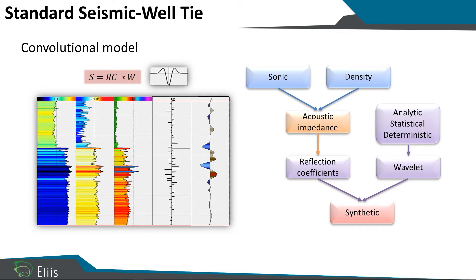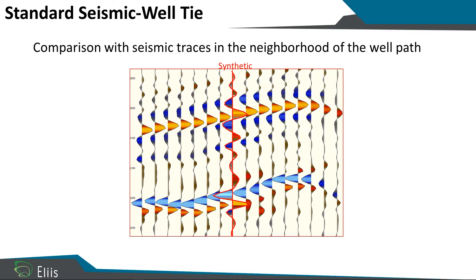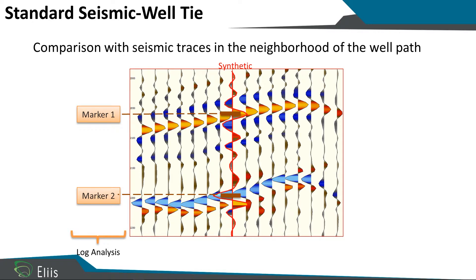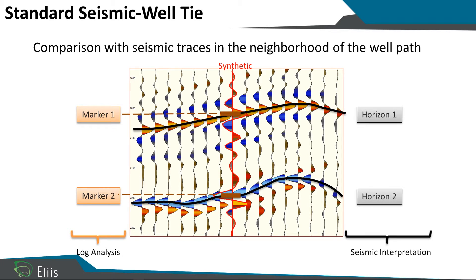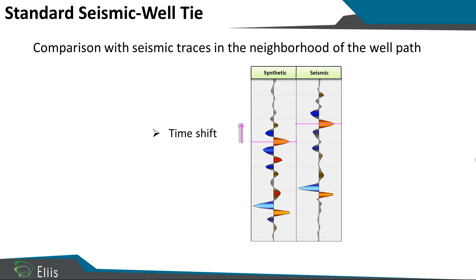The standard seismic to well tie starts with the sonic and the density to compute the acoustic impedance and then the reflection coefficient. On the other part, I compute the wavelet, make a convolution between the two to compute my synthetic, and then I try to tie my synthetic with my seismic extracted along my well. This is a comparison of my synthetic in the middle of the picture with my seismic, with two different markers, one and two, and now I try to tie the seismic with my seismic interpretation and my horizons.